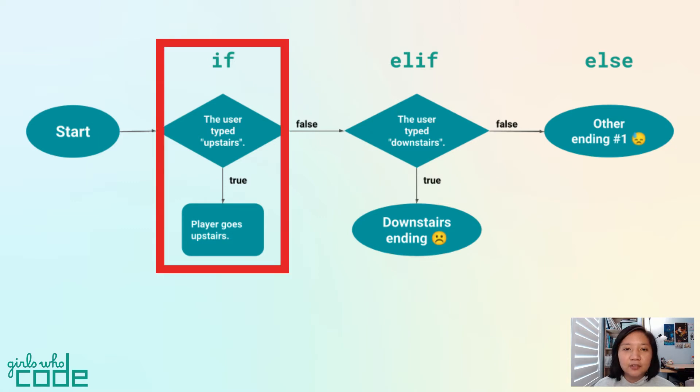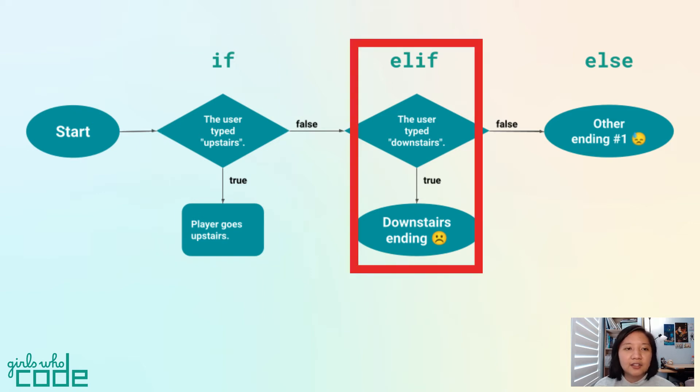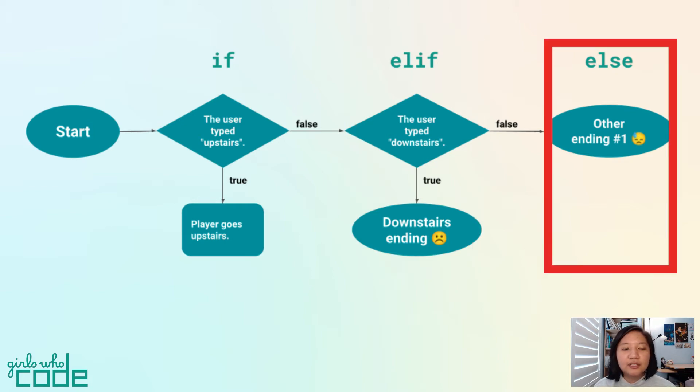That means if the first if statement is true, it will not read the rest of the conditional statement. If it's false, it will check that else if to see if that is true. Then we can end with an else which will run if everything else is false.